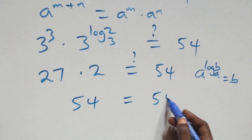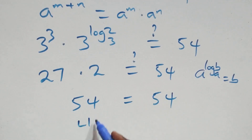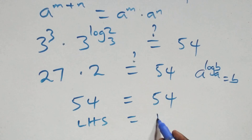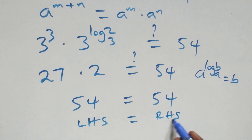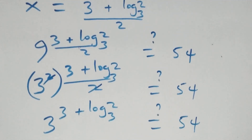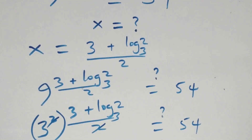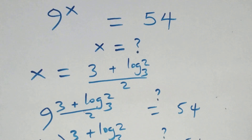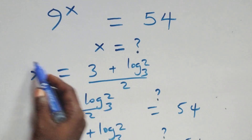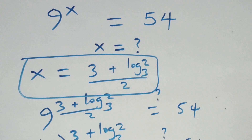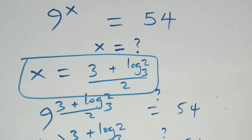Which equals 54, which equals 54 on this side — left hand side equals the right hand side. Therefore we conclude that x equals to (3 plus log 2 base 3) all over 2 satisfies the given problem. Thank you for watching; don't forget to subscribe for more videos, turn on the notification bell, share this video, give it a thumbs up, and put your comments. See you next time, bye for now.